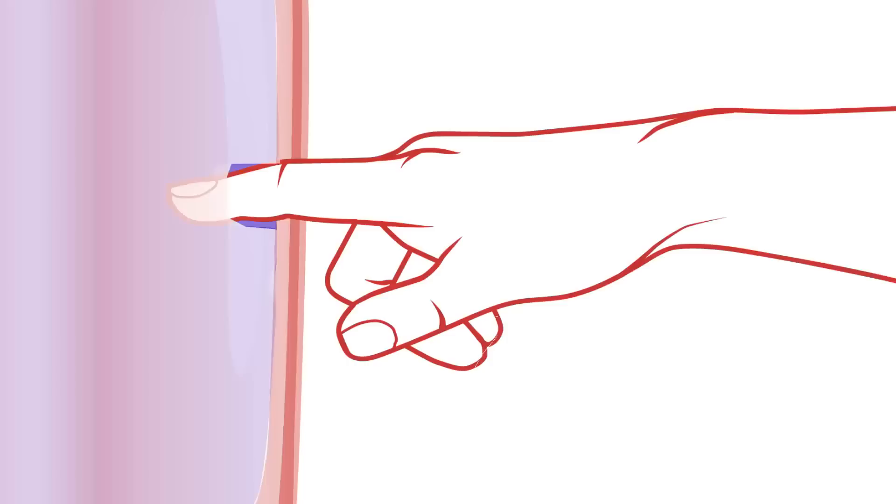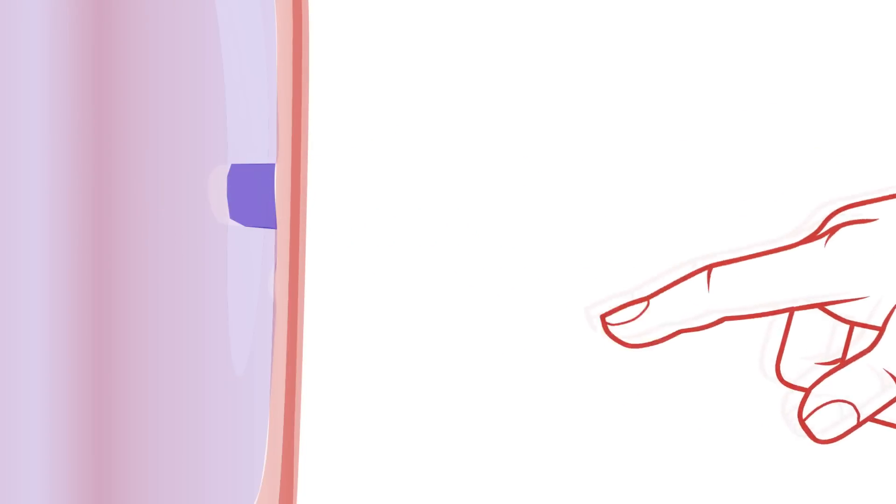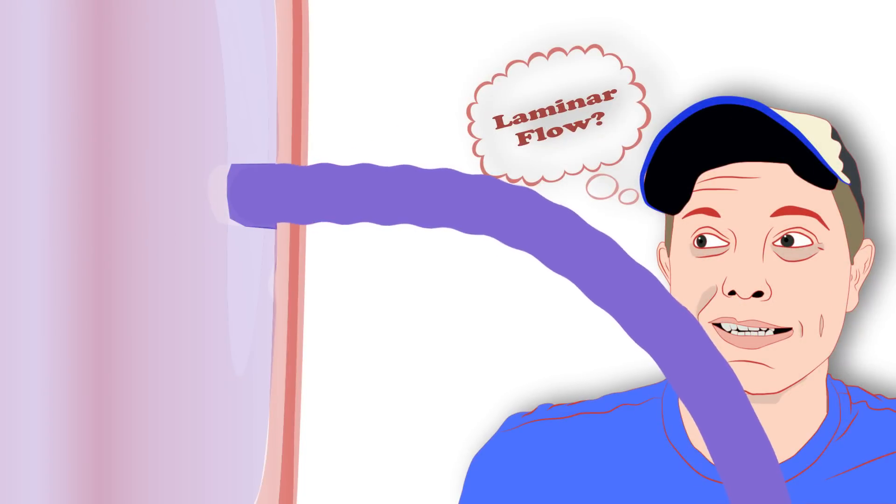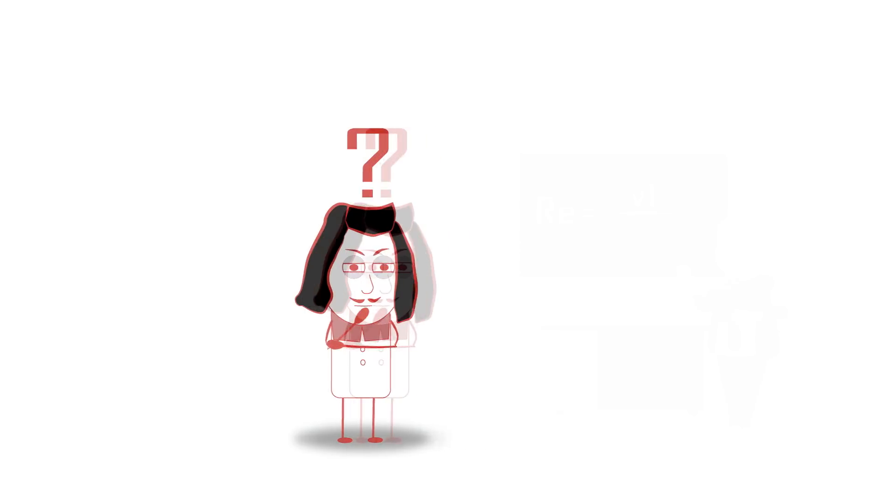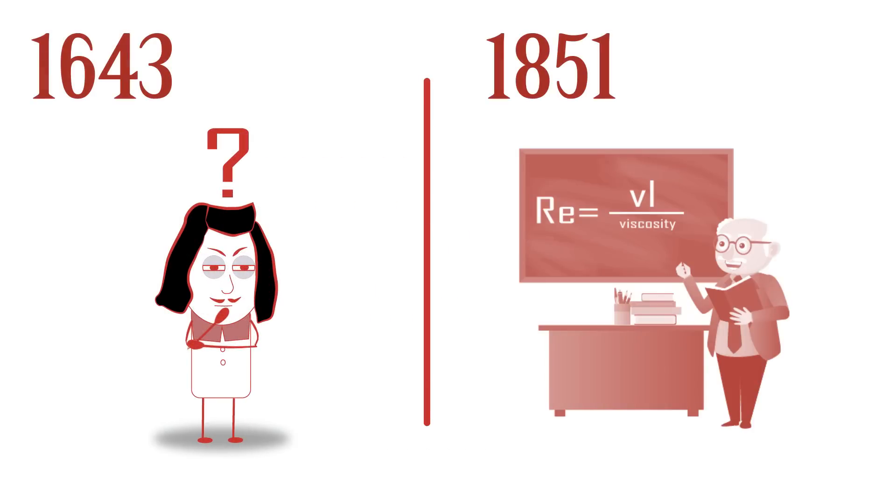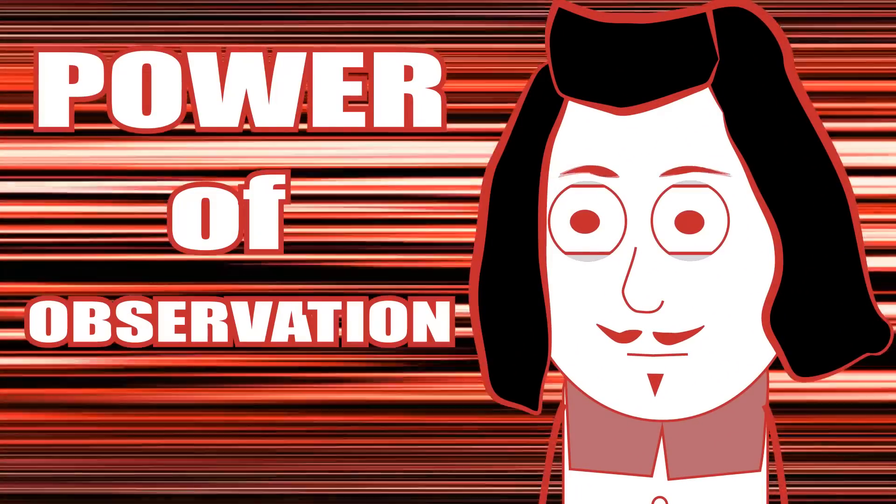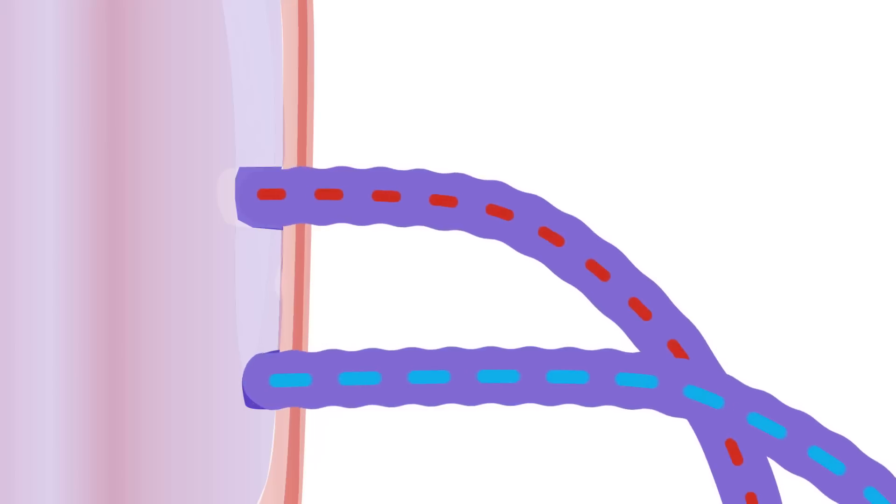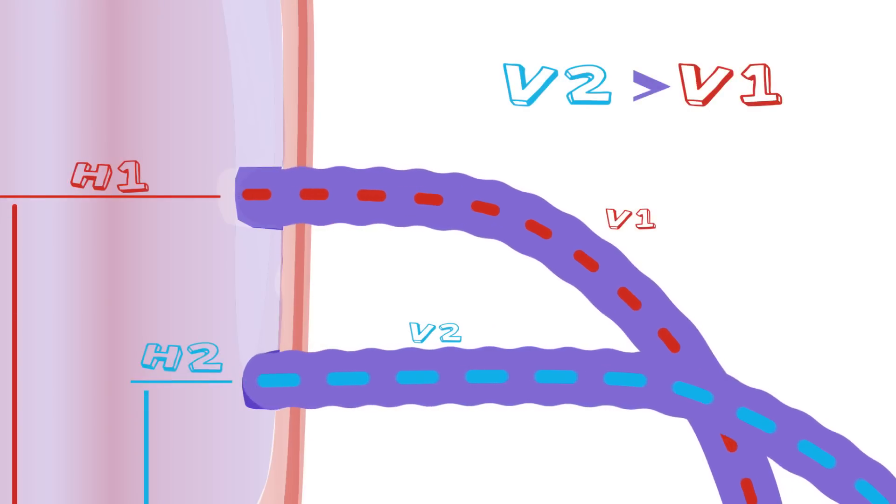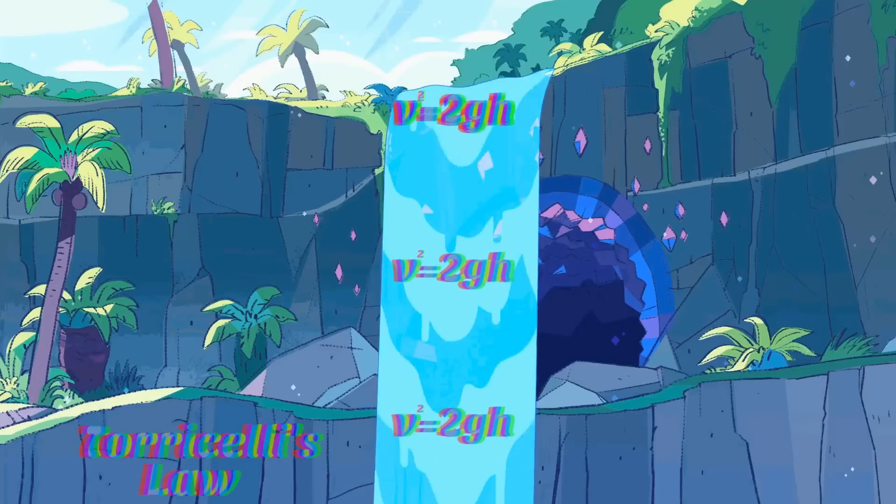Galileo Galilei decided to poke a hole in a water tank, and because of that a leakage was formed which might or might not be in laminar flow. But he didn't know that at the time because the Reynolds number would be defined in the next 200 years. So he poked another hole and using his power of observations, he deduced that the speed of the water flowing out of the hole is proportional to the height of the hole in the tank. Thus, the Torricelli law was created.